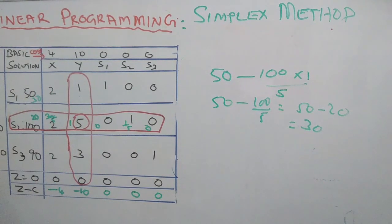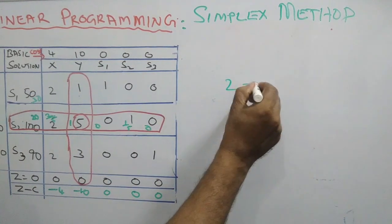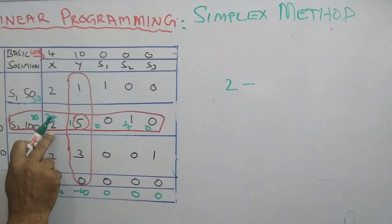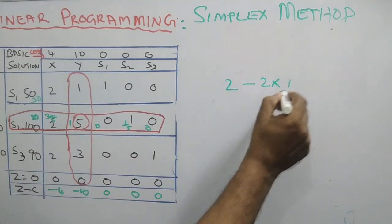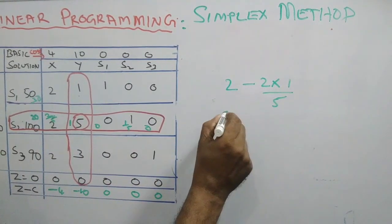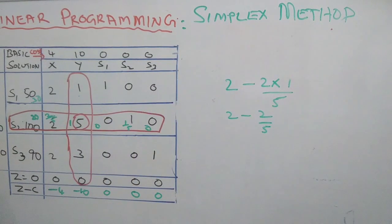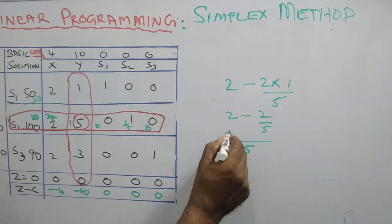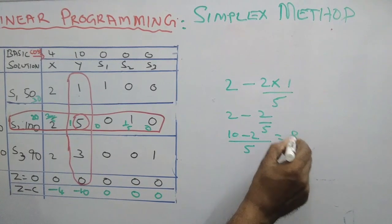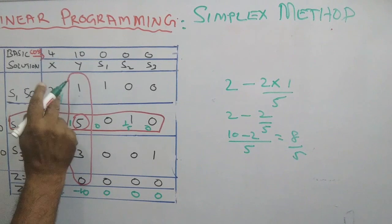How will you find the next number? The existing number is 2. Using the formula: 2 minus the corresponding number in the pivot row 2, into 1 by 5 — that is 2 minus 2 by 5, which gives 10 minus 2, equals 8 by 5. This number is 8 by 5.